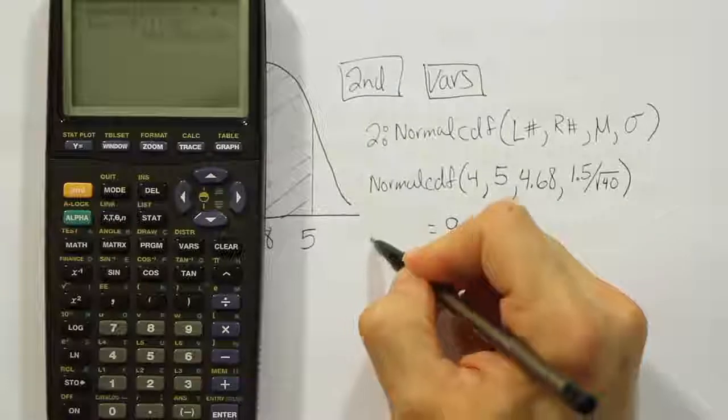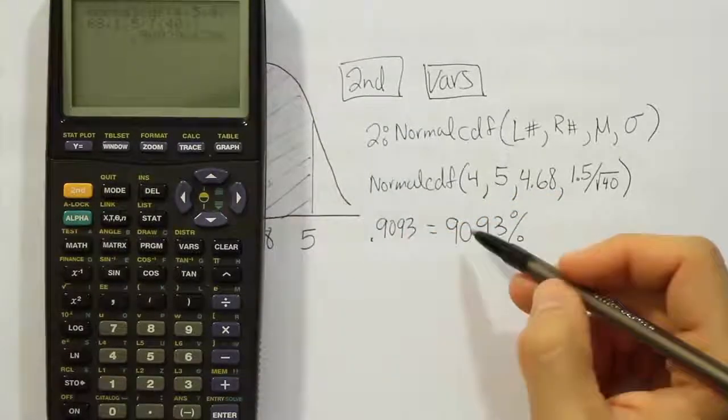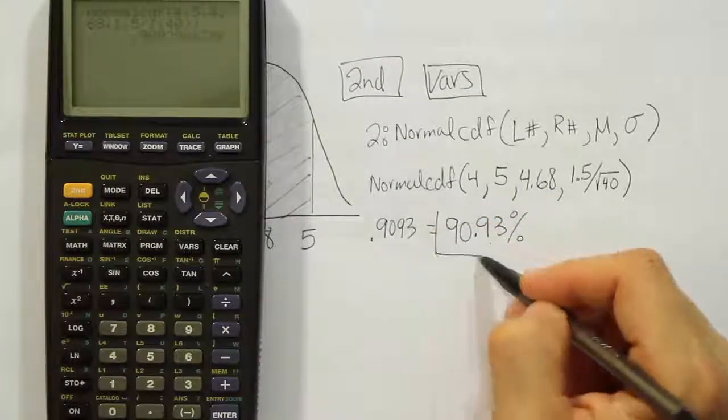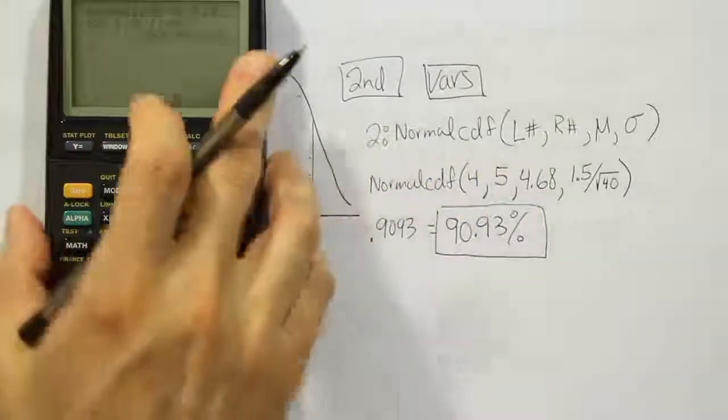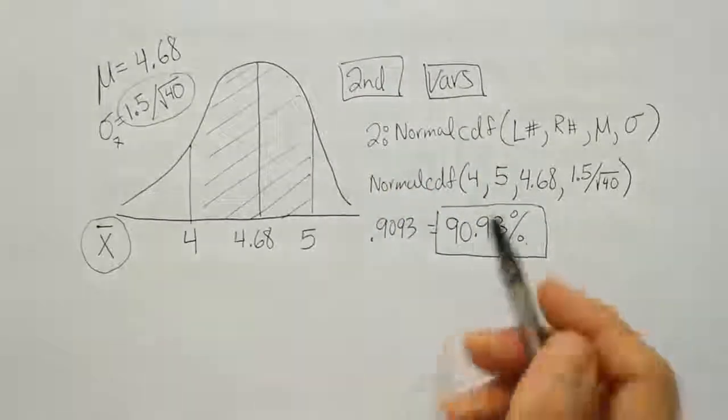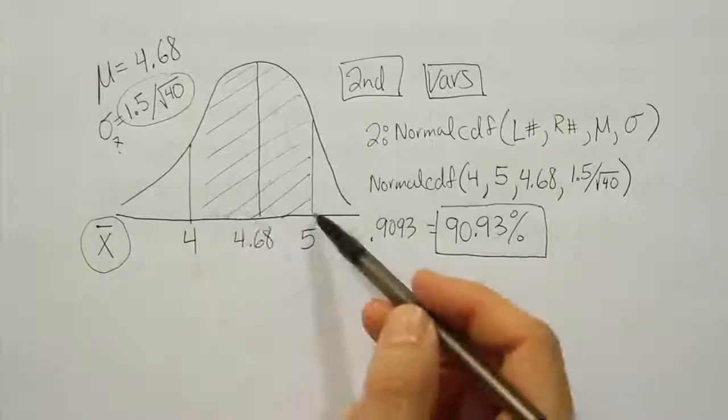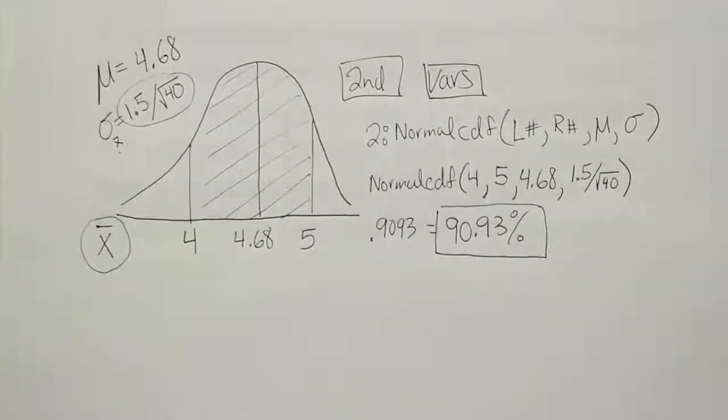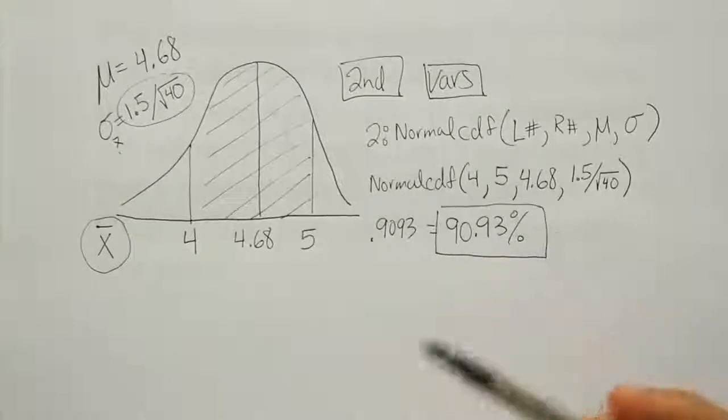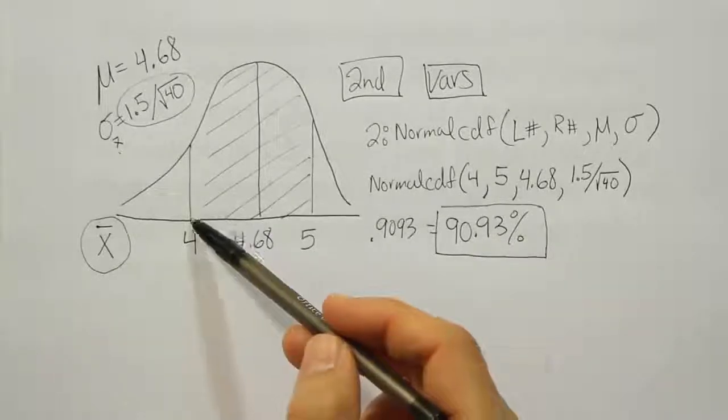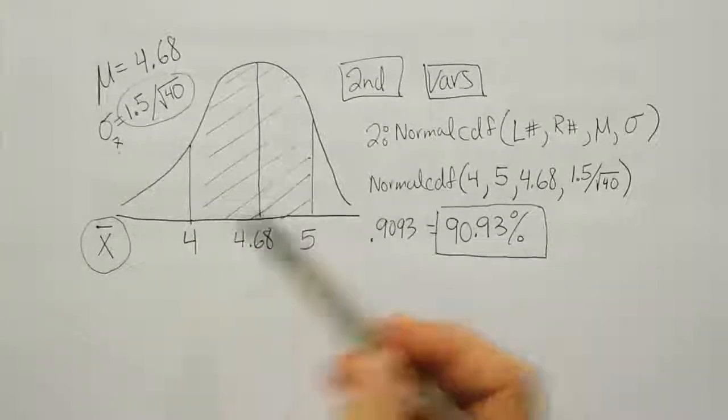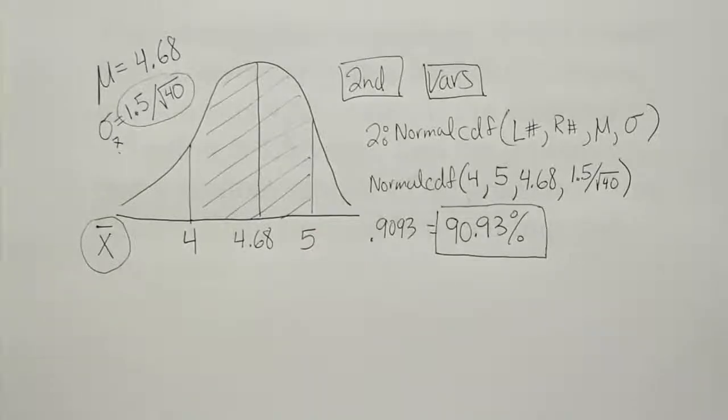It has a decimal 0.9093, which is the same as 90.93%. So essentially, 90.93% of groups of 40 will finish between four and five years on average. So if you look at a random selection of 40 students from Oregon State University, you'll find that 90.9% of the time, that group on average will finish between four and five years. That's your answer to the problem.